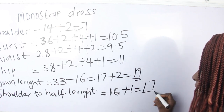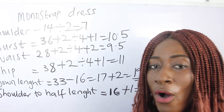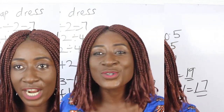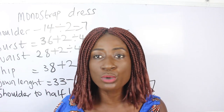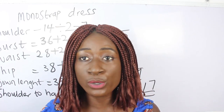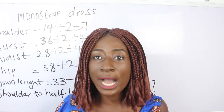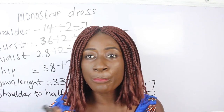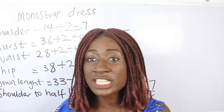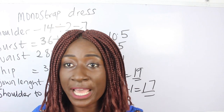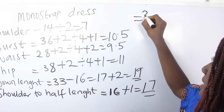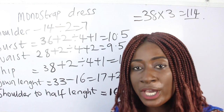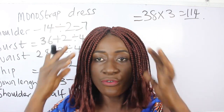To know how many inches of fabric are required for pleating, multiply your hip measurement by 3 (for a very full look) or by 2.5 (for less volume). In today's video I'm multiplying my hip measurement of 38 by 3, giving 114 inches for the pleating width.